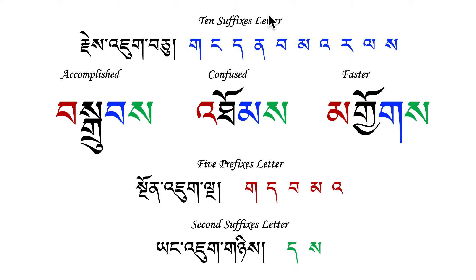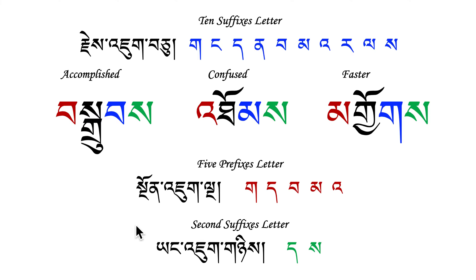Welcome back to basic reading Tibetan language. I'd like to review the previous lesson: Jinjook Chu, Ngunjook Nga, Yangjook Ngi. I would like to explain a little bit more so that we can get more familiar, because I know so far it's a little bit confusing. I'd like to explain one more time so we can recognize which are Jinjook, which are Ngunjook, and which are Yangjook.